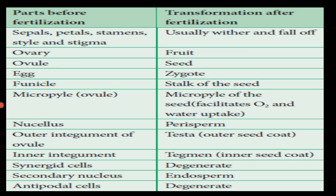After fertilization, what happens to the flower parts? Parts of the flower before fertilization include the sepal, petal, stamen, style, and stigma. After fertilization, these usually wither and fall off. The ovary becomes the fruit, and the ovule becomes the seed.